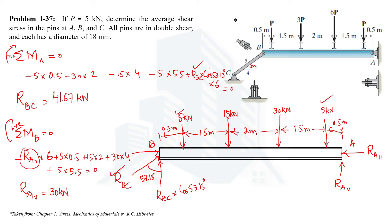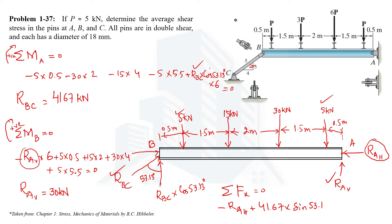Now we have RBC and RAB, but we still need RAH, the horizontal reaction. Using the first condition of equilibrium — summation of all forces in the x-direction equals zero — RAH is negative (pointing left) and the horizontal component of RBC is positive: 41.67 × sin 53.13° equals zero. Solving gives RAH = 33.33 kN.